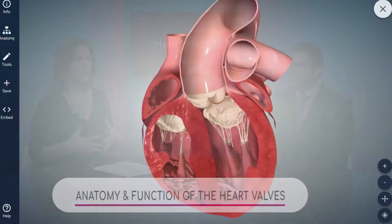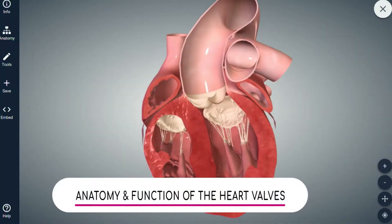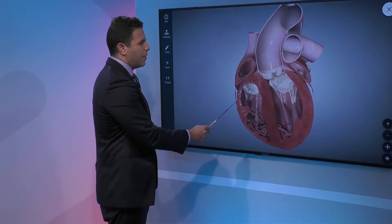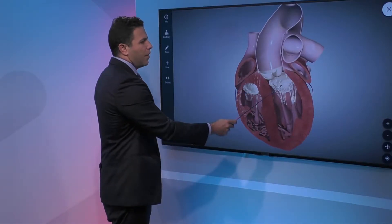Show us where the valves are on the heart and what the function is, and give us a little education here. Dr. Elias: when you're looking at the heart, you want to break it down into structures on the left side and on the right side. The main valves you want to be aware of are your tricuspid valve here, your mitral valve here, and your aortic valve here.